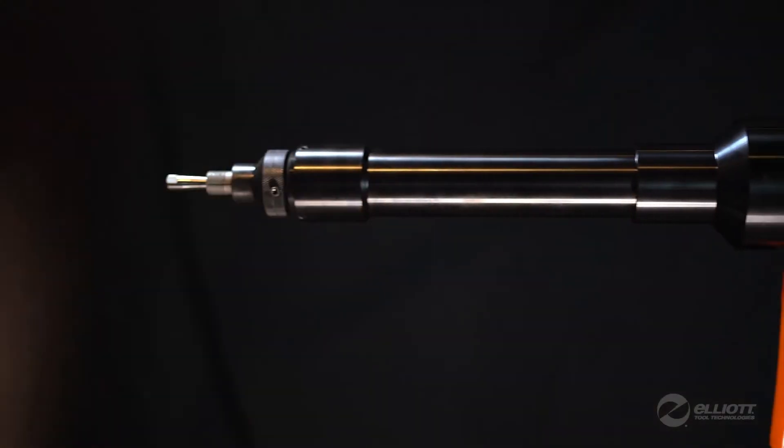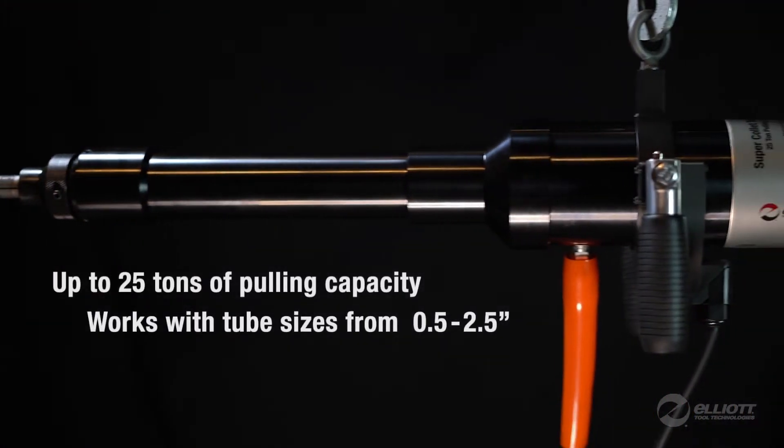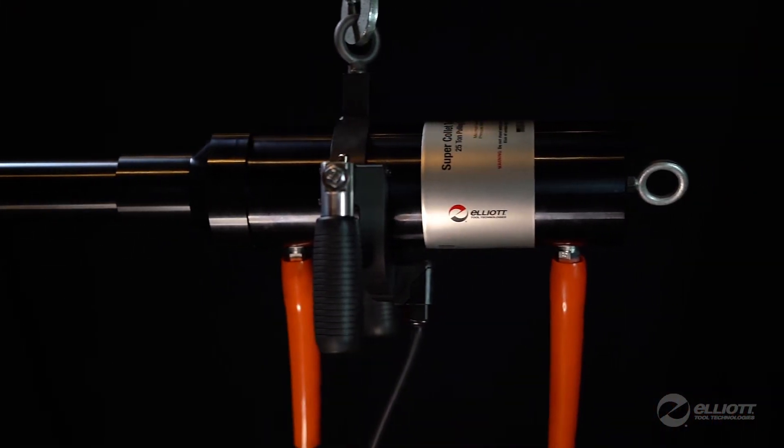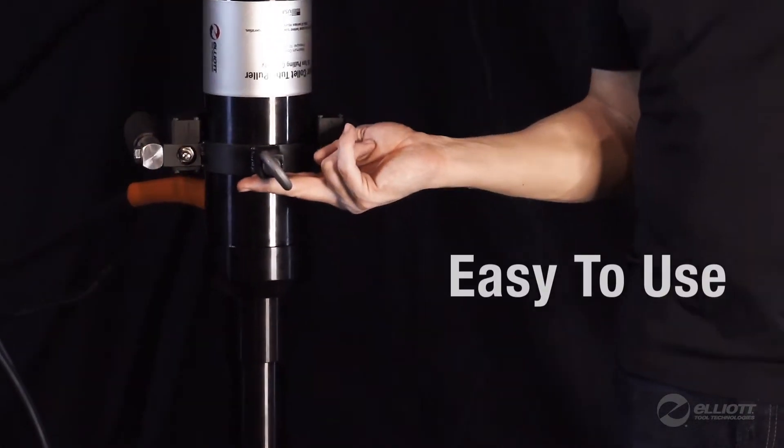In addition to speed, the SuperCollet Tube Puller offers versatility for the operator, featuring eye bolts for easily connecting to a counterbalance in both horizontal or vertical pulling applications.